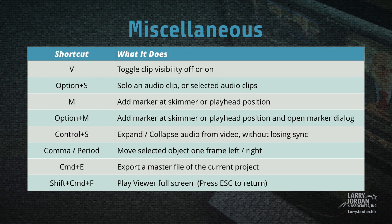Other miscellaneous shortcuts include V, which toggles clip visibility off or on. Option-S solos an audio clip or selected audio clips. M adds a marker at the skimmer or playhead position. Option-M adds a marker at the skimmer or playhead position and opens the marker dialog. Control-S expands or collapses audio from video without losing sync. Comma moves a selected object one frame left. Period moves it one frame right. Command-E exports a master file of the current project. And Shift-Command-F plays the viewer full screen. Press Escape to return.